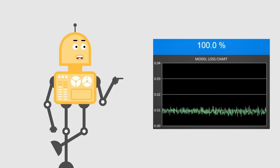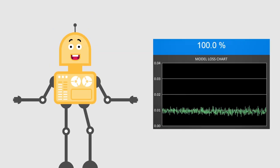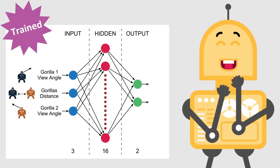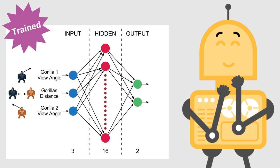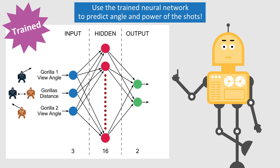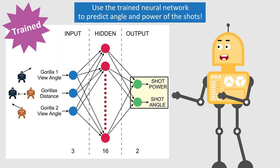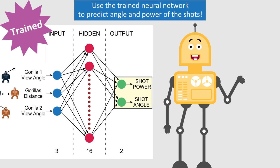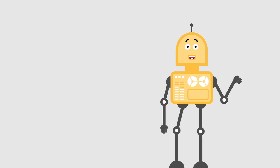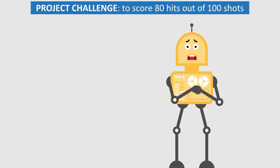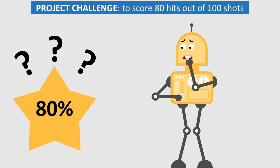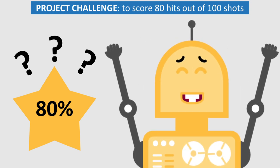After 10 seconds and only one training iteration, the model loss value is quite low. That means our neural network is already trained. So we can use it now to predict the angle and power of the shots. With that, it's time to see if the gorillas can achieve the main goal, and successfully score more than 80 out of 100 shots. So let's run the full game.